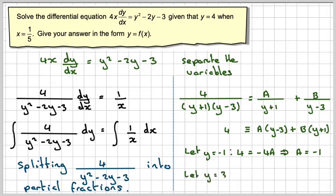If we let y = 3, this bit here will be 0. We're going to have 4 = 4B, therefore B = 1.